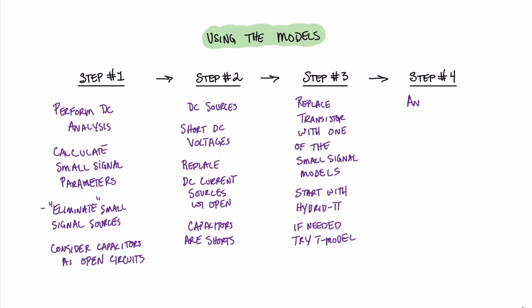Step number four is all about analyzing the new circuit. All you're going to do there is use your circuit theory techniques to find things like the input resistance, output resistance, and the voltage gain. Now that we have a sense of how to use these amplifier circuit models, let's go ahead and try out a circuit.